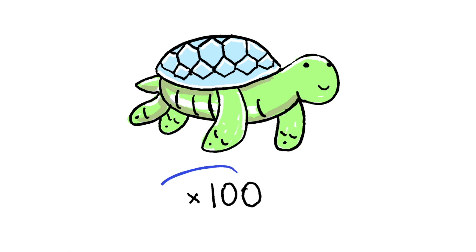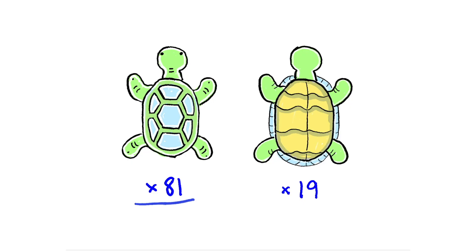This is Chim Chom, and he's part of a 100-person turtle family. Of these 100 turtles, 81 of them have their shells up, and 19 of them have their bellies up.